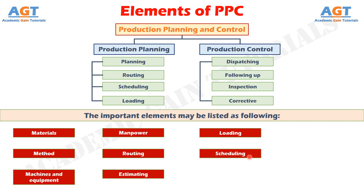Element No. 8: Scheduling. Scheduling ensures that parts, sub-assemblies and finished goods are completed as per required delivery dates. It provides a timetable for manufacturing activities. Scheduling is needed to prevent unbalanced use of time among work centers and departments, and to utilize labor in such a way that output is produced within established lead time or cycle time, so as to deliver products on time and complete production at minimum total cost.